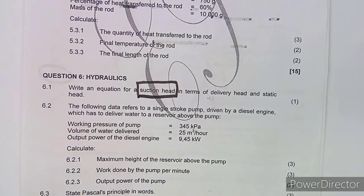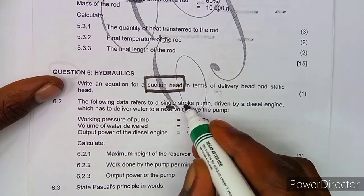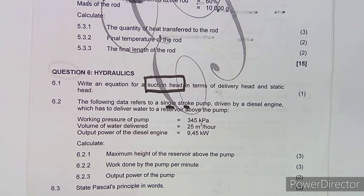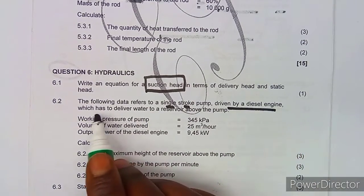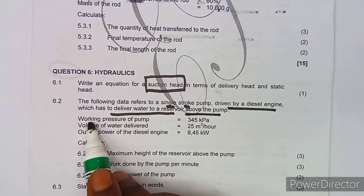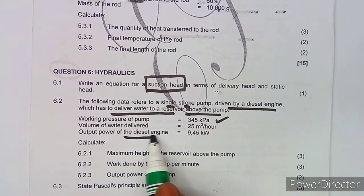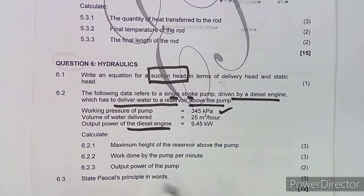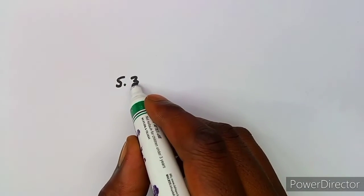On 6.2, we are given data that refers to a single stroke pump. Take note: this is a single stroke pump. When answering questions on hydraulics, note which type of pump you are working with. This pump is driven by a diesel engine which has to deliver water to a reservoir above the pump. We are given the mean working pressure, the volume per hour, and the output of the diesel engine.